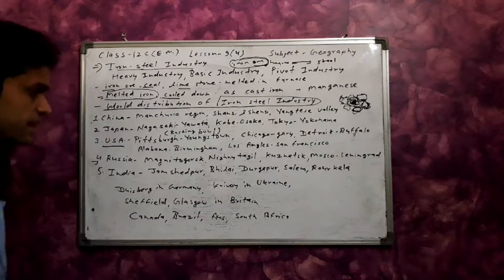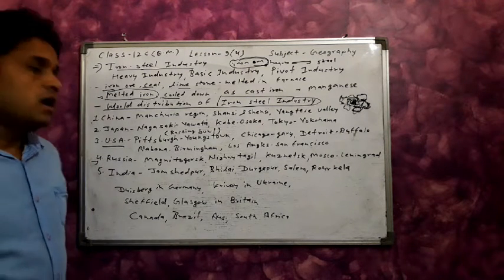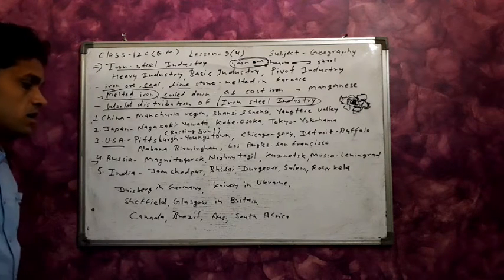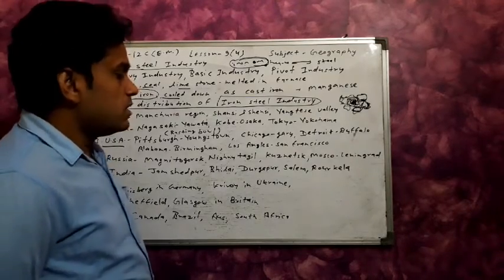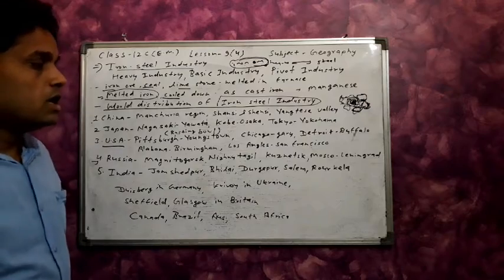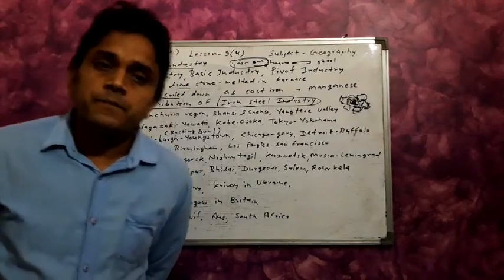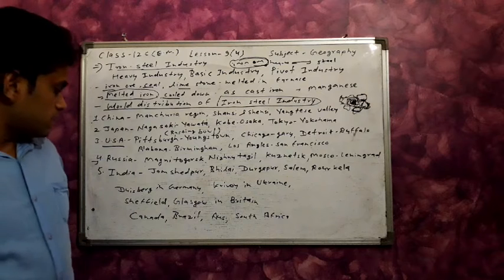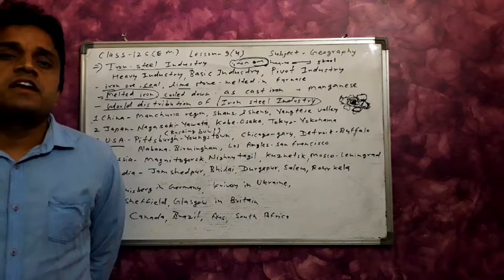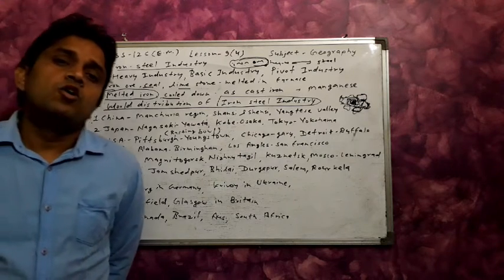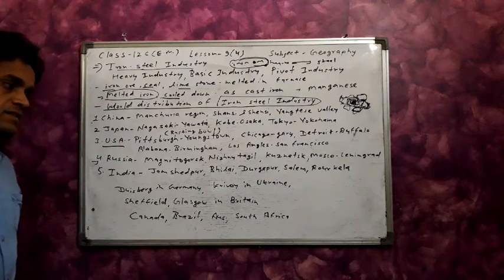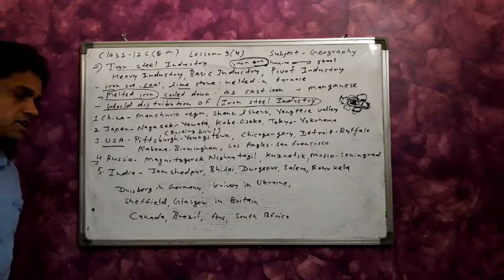India has a great place in the production of iron and steel. The main iron and steel centers in India are established in Jamshedpur, Bhilai, Durgapur in West Bengal, Tamil Nadu, and Rourkela in Odisha. These cities were chosen because coal regions and iron ore deposits are found nearby.